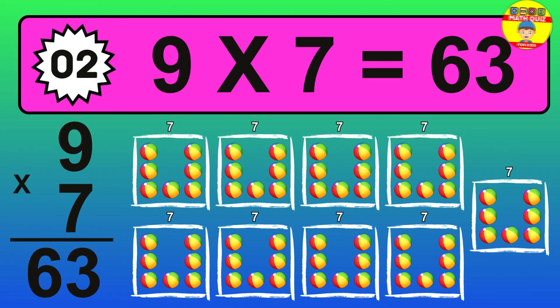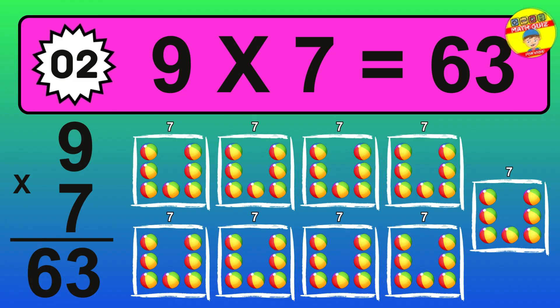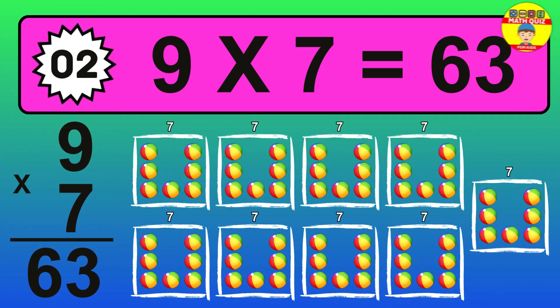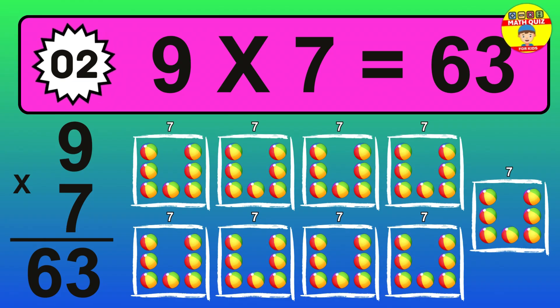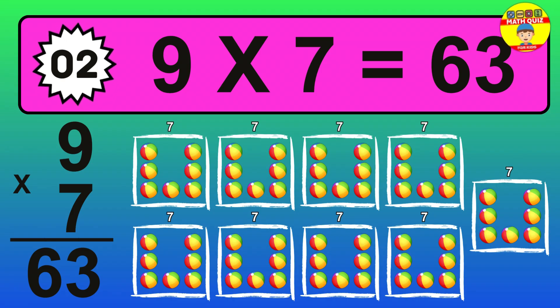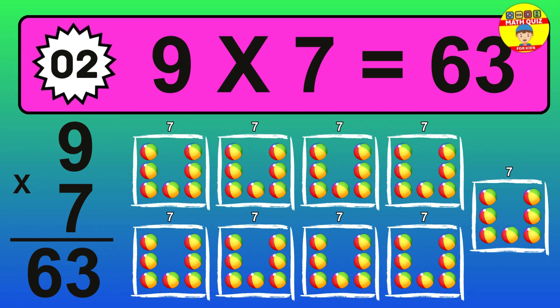The answer is 9 times 7 is 63. To calculate, we have 9 groups with 7 balls each one. So, how many balls do we have? 63 balls.